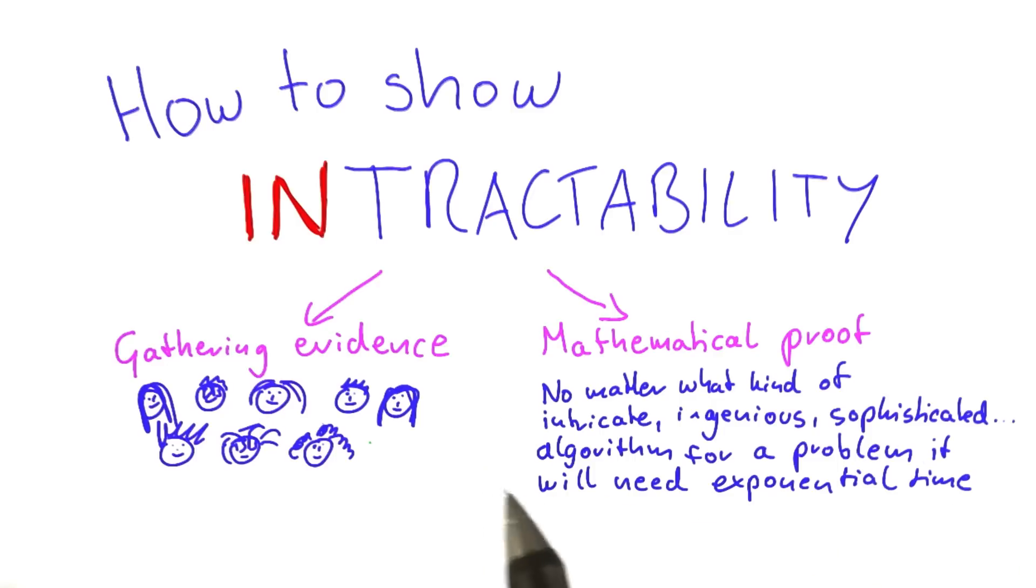So what I would like you to think about for our next quiz is the advantages and disadvantages of each of these approaches here. And I would like you to think about two things. First of all, which of these approaches is probably easier to accomplish? And secondly, which of these two approaches here would you find more convincing to show that a problem is intractable? So please give me your two answers in these bubbles.